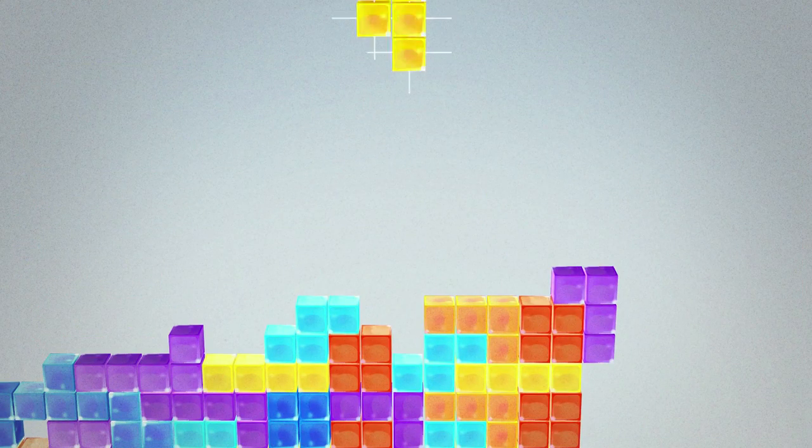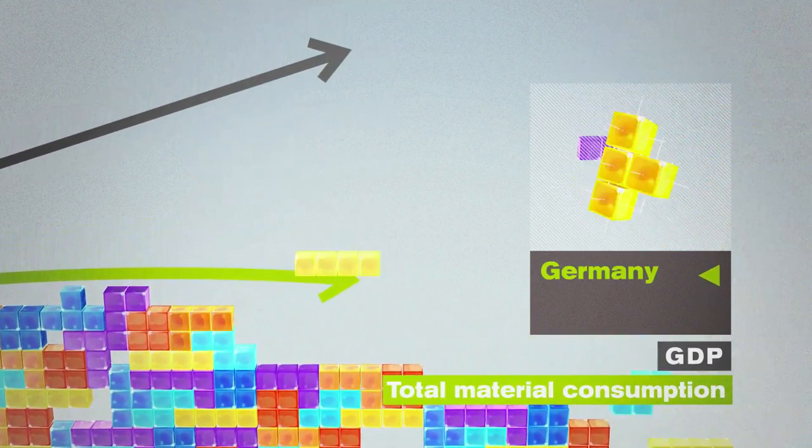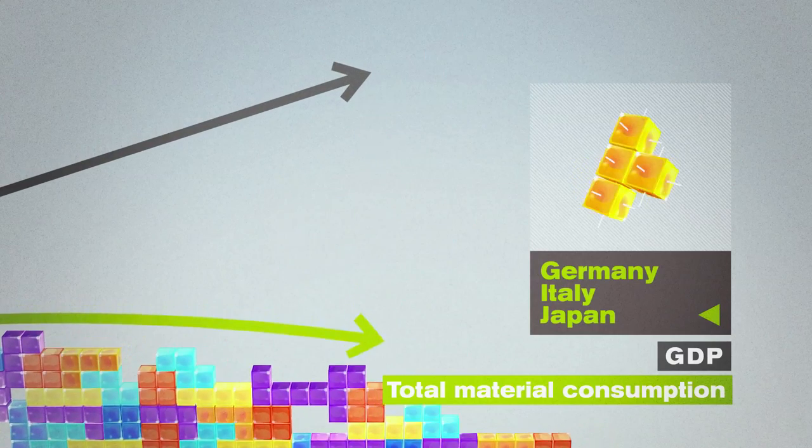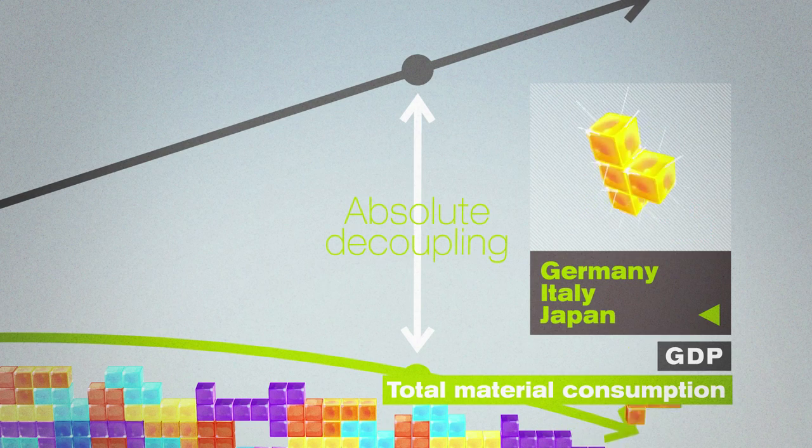Several countries have been showing us how these worrying trends can be reversed. Germany, Italy and Japan have succeeded in decoupling material consumption from economic growth in absolute terms and diminished their overall domestic material consumption.